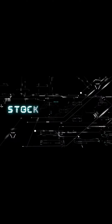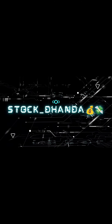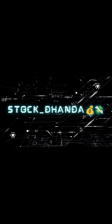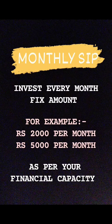Hello friends, welcome to my another video regarding types of SIPs. Monthly SIPs: in this you have to invest every month a fixed amount, for example rupees 2000 per month and rupees 5000 per month. However, the investment amount depends upon your financial capacity.